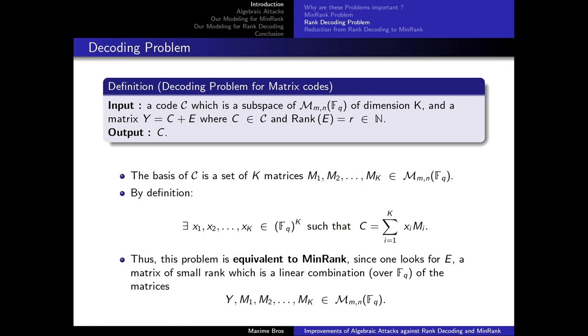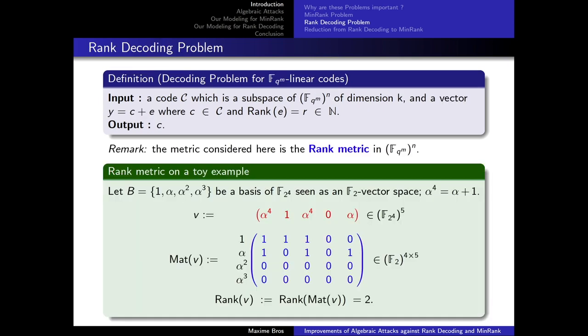This problem is perfectly equivalent to min rank, since one looks for E, which is a matrix of small rank that is a linear combination over F_Q of the matrices — namely Y plus all the M matrices. So now I will present the rank decoding problem, which is the decoding problem for F_{Q^M}-linear codes.